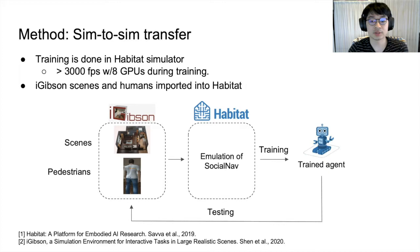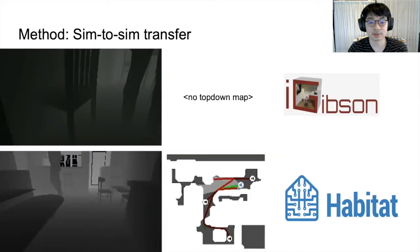First off, we chose to train our agent in the Habitat simulator. Habitat is very fast and can achieve over 3000 FPS with 8 GPUs during training. We imported all of the 3D object files for the iGibson scenes and pedestrians to emulate the social nav task, with multiple pedestrians roaming around the environment. The trained agent is then directly deployed to iGibson in a zero-shot manner with no explicit sim-to-sim adaptation.